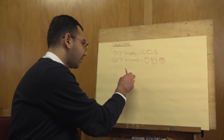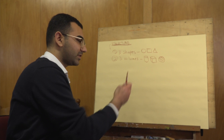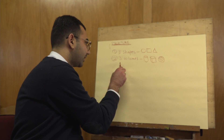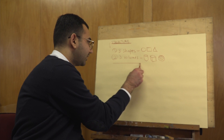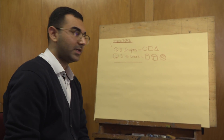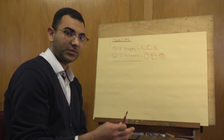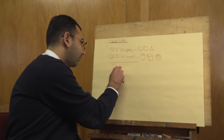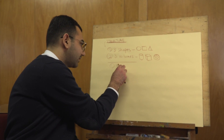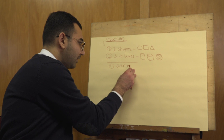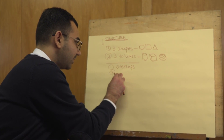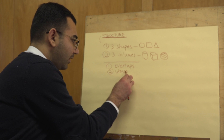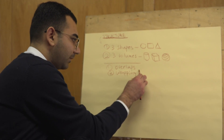Now let's see how we can use all these structures and shapes in our drawings. I want to give you some instruments — some ways to add more depth and structure to your drawings. They are overlaps, wrapping lines, and economy of line.